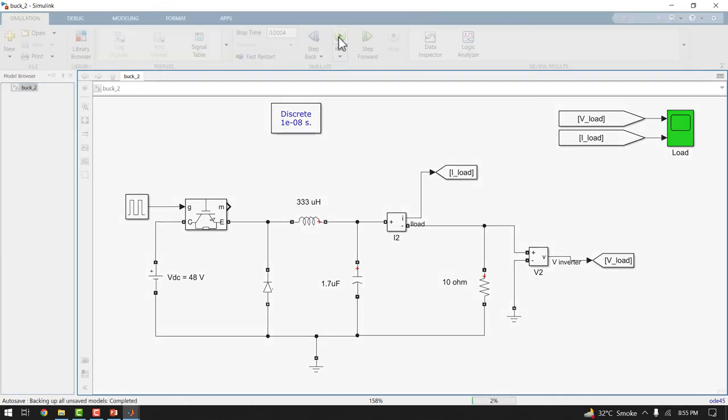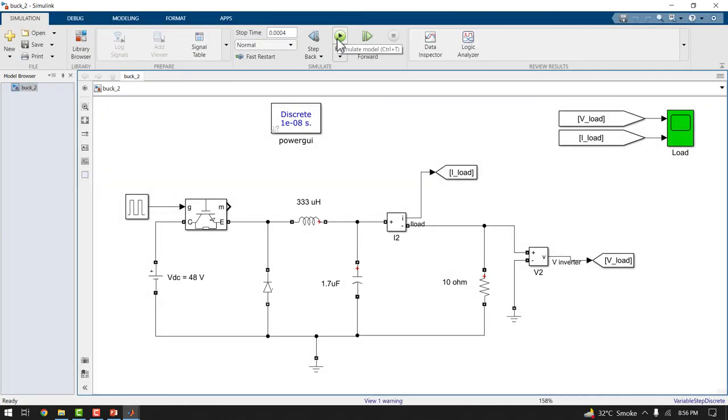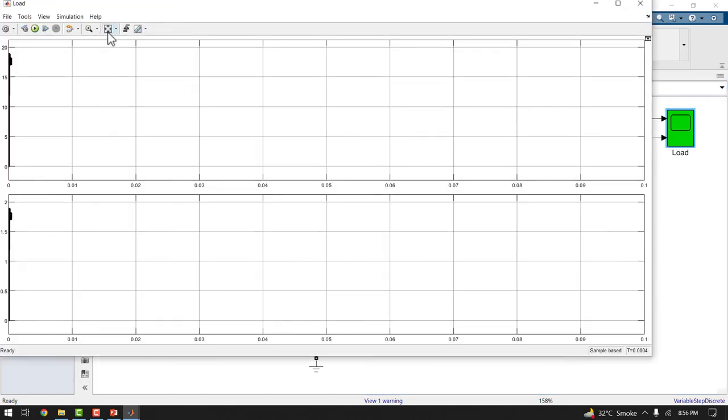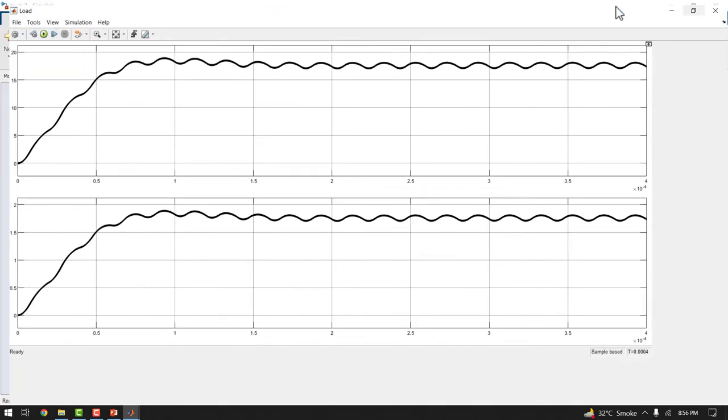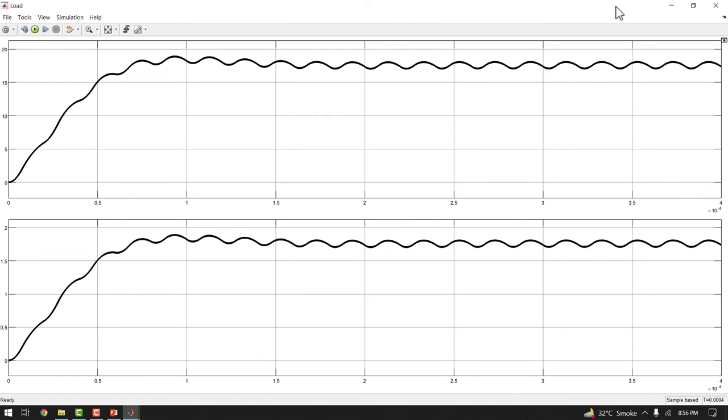Now press the run button. After the simulations are completed double click the scope to see the results. The results can be divided into two parts. Number 1, this is the transient response. Number 2, this is the steady state response.